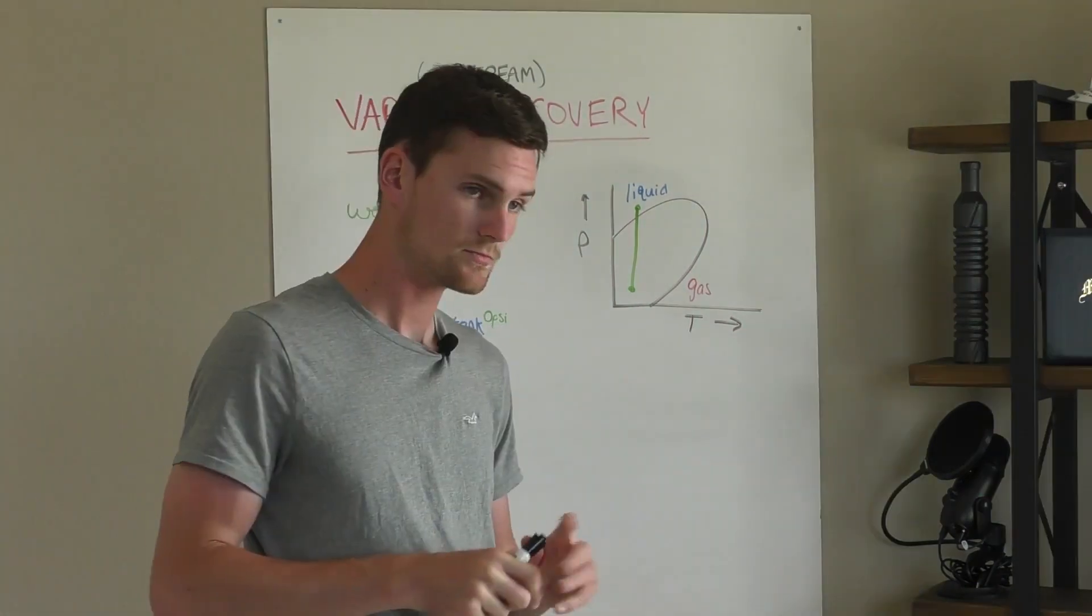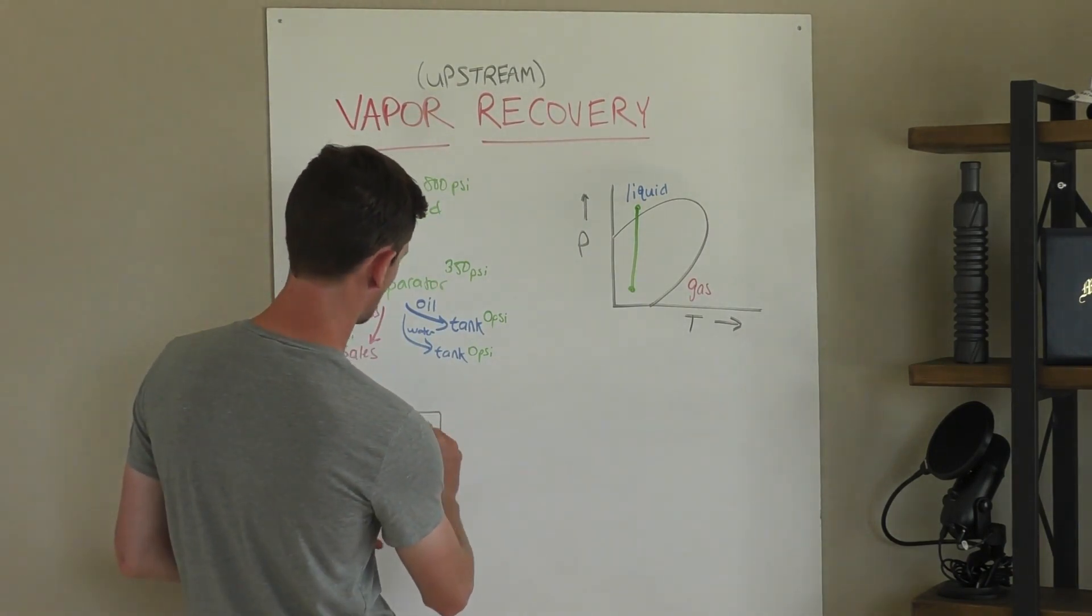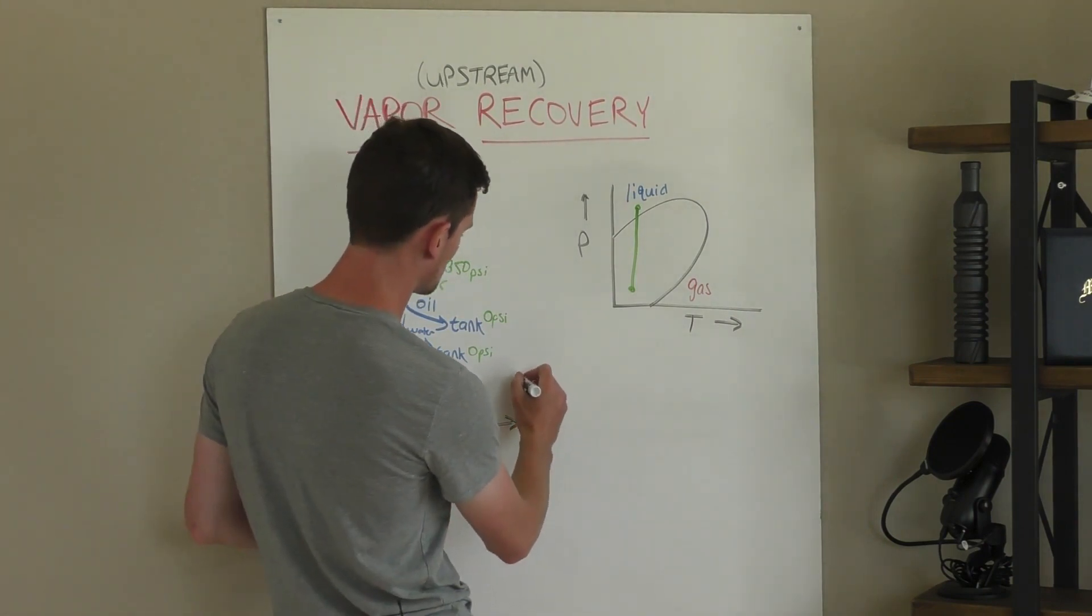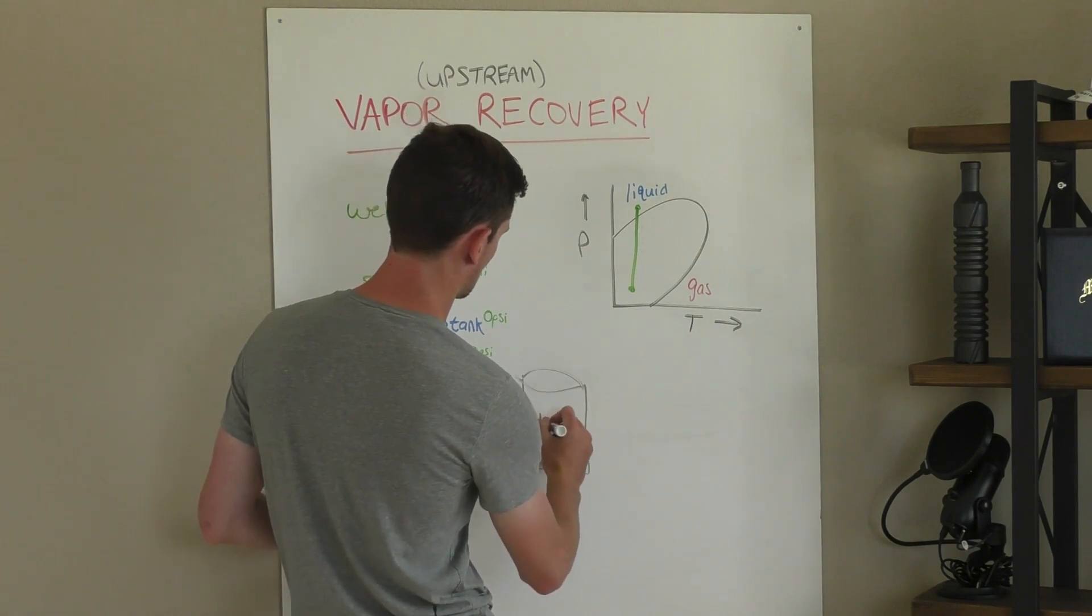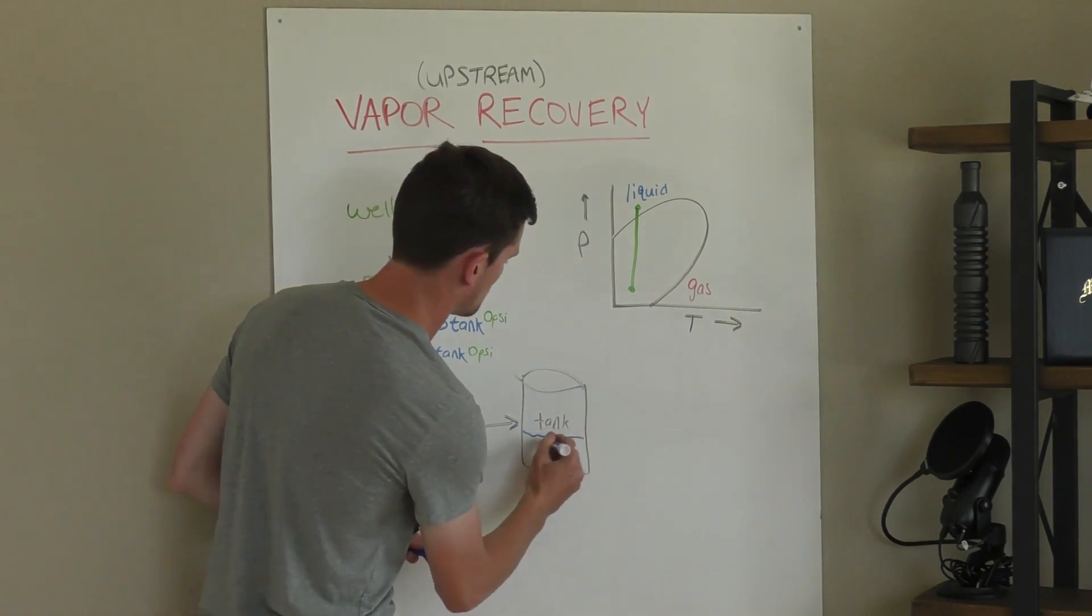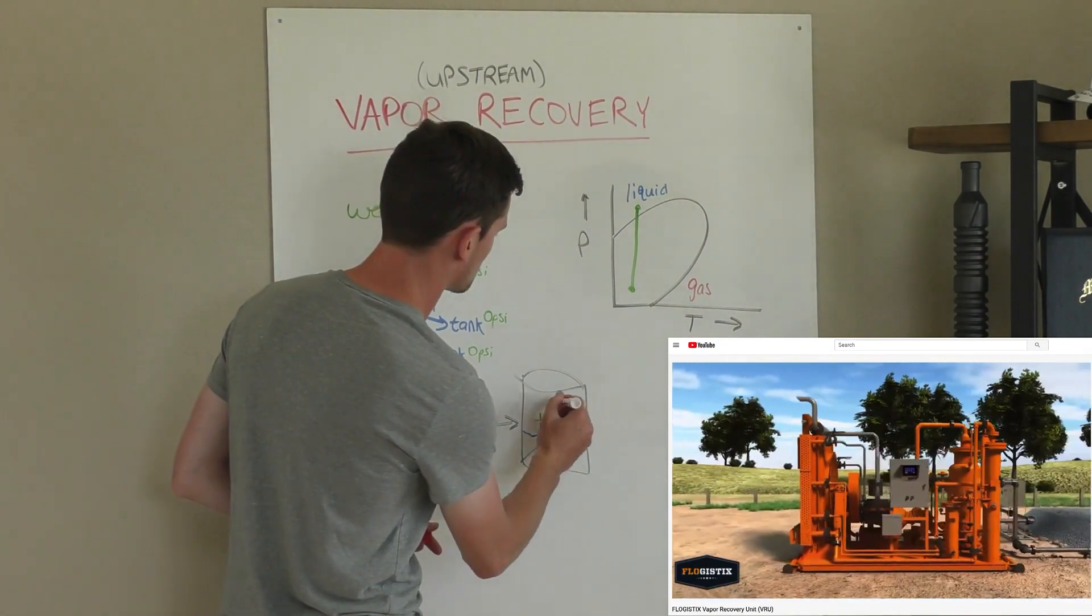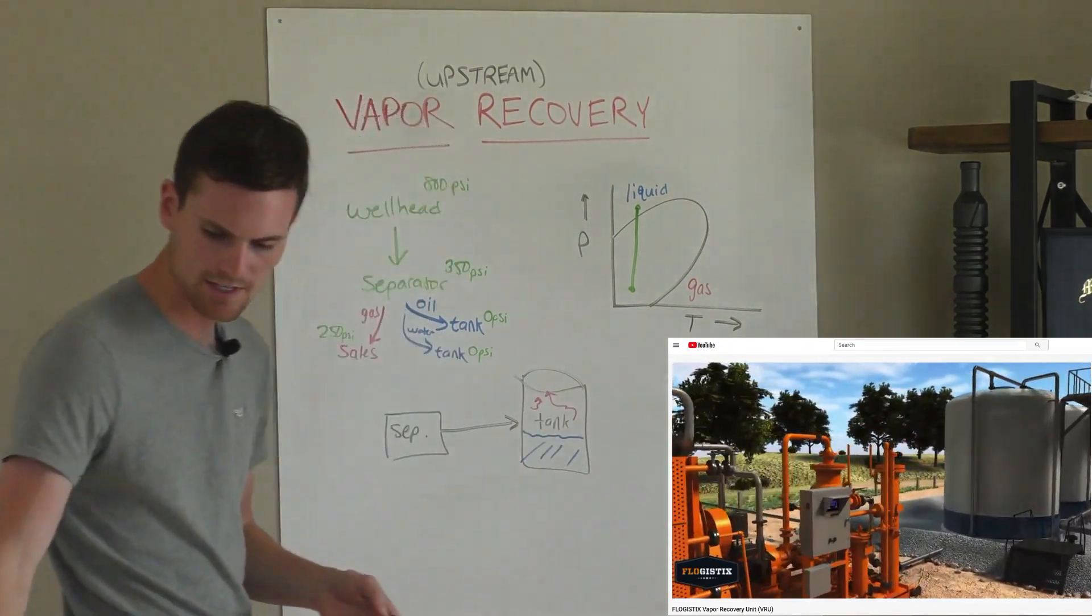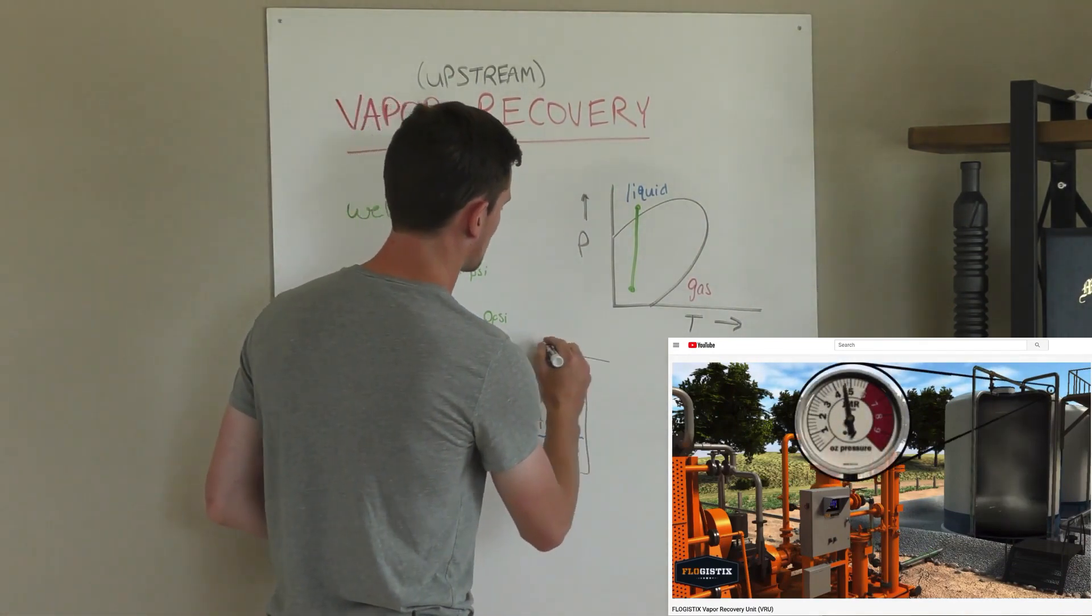All right, so let's draw this out. You've got your separator, and from your separator your liquids are going to go into your tank. So your liquids are going to come in. And once you get into that low pressure environment, your gases are going to come out of solution and they're going to raise the top of the tank.